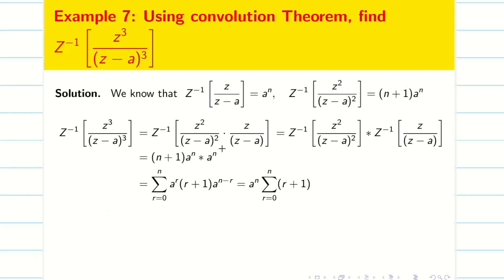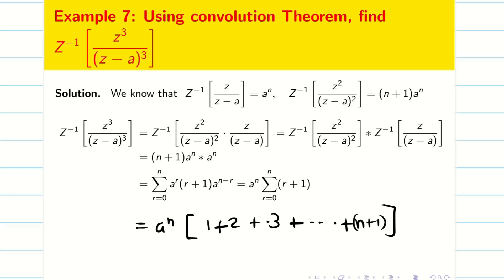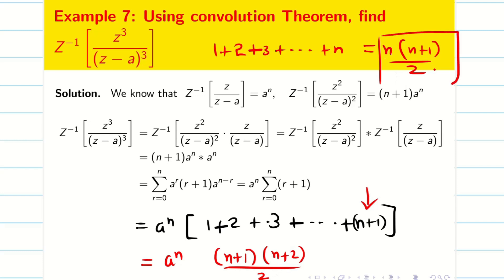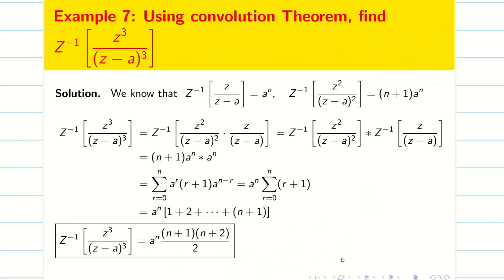Substituting r = 0 to n: the terms are 1, 2, 3, …, (n+1). We need the sum 1+2+3+…+(n+1), which is the sum of (n+1) numbers. We know the sum of n numbers is n(n+1)/2, so the sum of (n+1) numbers is (n+1)(n+2)/2. Therefore the answer is aⁿ · (n+1)(n+2)/2.